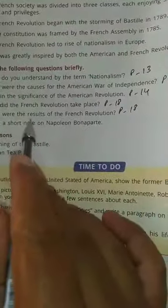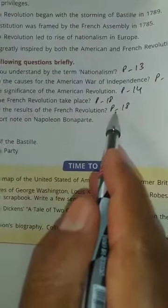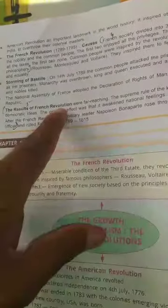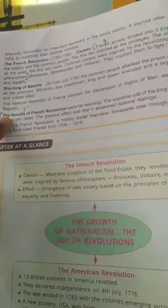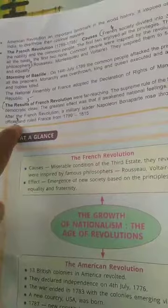Next, What were the results of French Revolution? Again, page 18. These are the results. It starts from here. And till here. Officers.